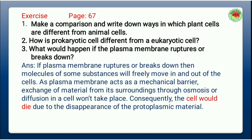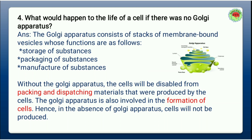Exercise Question 3: What would happen if the plasma membrane ruptures or breaks down? The plasma membrane is a protective covering of the cell that protects the cell contents. If it ruptures or breaks down, the organelles and protoplasmic material inside would be free to move in and out. This disrupts diffusion and osmosis processes, and as a result, the cell will definitely die.